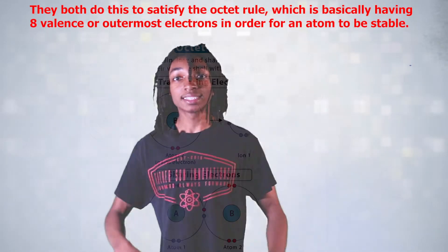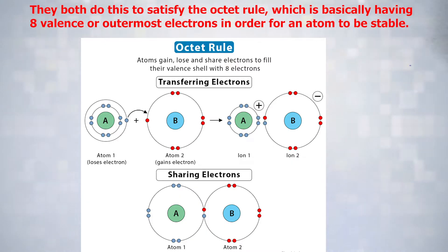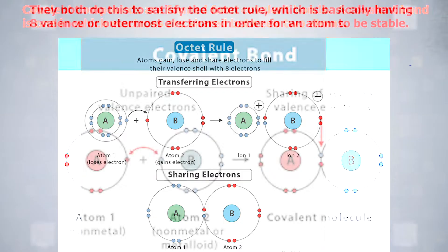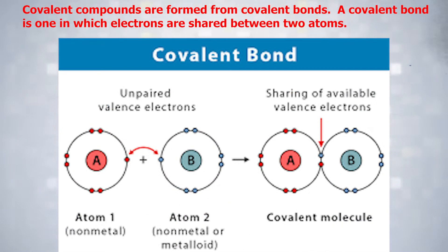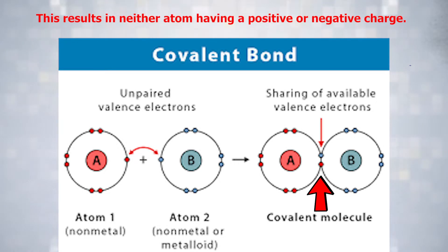They both do this to satisfy the octet rule, which is basically having 8 valence electrons — or outermost electrons — in order for an atom to become stable. Covalent compounds are formed from covalent bonds. A covalent bond is one in which electrons are shared between two atoms. This results in neither atom having a positive or a negative charge.